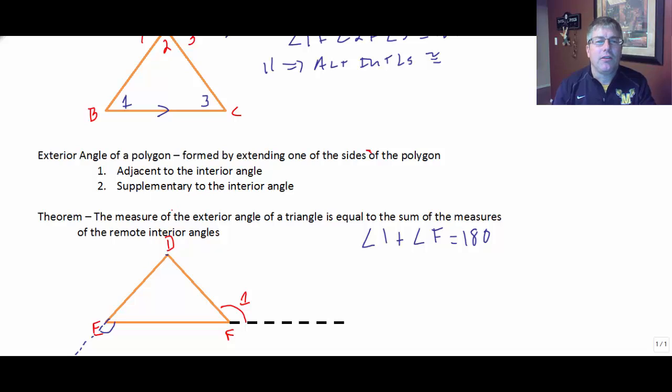So let's take a look at a theorem we have here. We have a theorem that says the measure of the exterior angle of a triangle is equal to the sum. So that means we're adding the sum of the measures of the remote interior angles. Remote means far away.